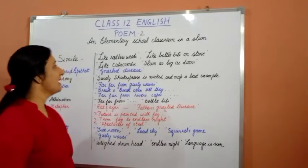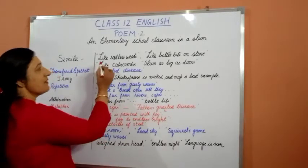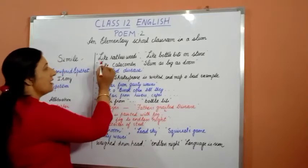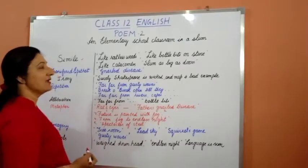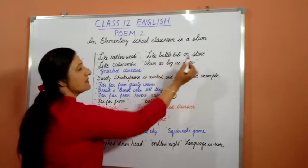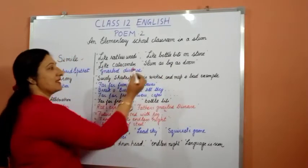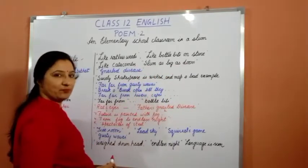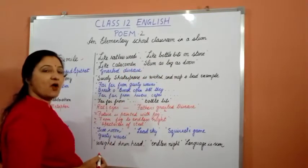First, let us see the use of simile. The first simile is used when children are compared 'like rootless weeds'. Then another example is 'like bottle bits on stone', then 'like catacombs', and 'slum as big as doom'. All these four are examples of simile.